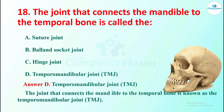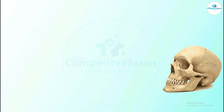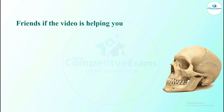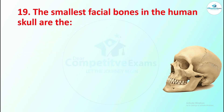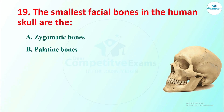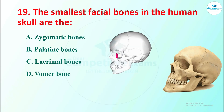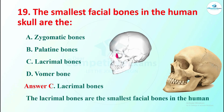Question 19: the smallest facial bones in the human skull are which? Options are zygomatic bones, palatine bones, lacrimal bones, or vomer bone. The right answer is lacrimal bones. The lacrimal bones are the smallest facial bones in the human skull, located near the eyes.